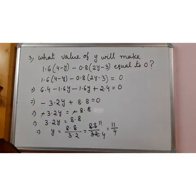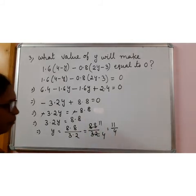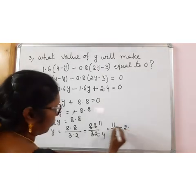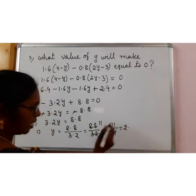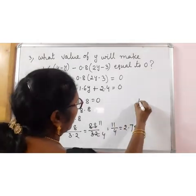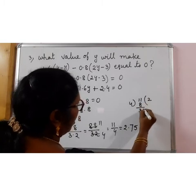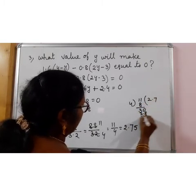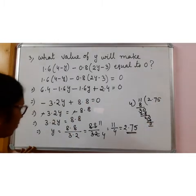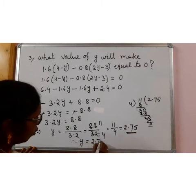4 2s are 8, 3 left out, so decimal at the 3.0, 4 7s are 28, 2.0, 4 5s are, if you cannot you can do like this, 4 2s are 8, 3, if you take 0 for decimal, 4 7s are 28, 2.0, 4 5s are 20. So 2.75. Therefore the required value of y is 2.75.